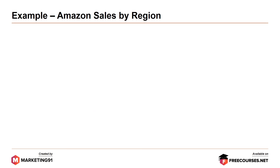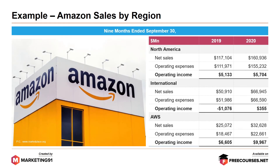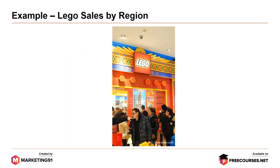Moving on to Amazon. Amazon's North America net sales witnessed a growth from $117 billion to $160 billion in 2020. Likewise, in the international market as well, net sales increased from $50.9 billion to $66.9 billion in 2020. As far as Amazon Web Services are concerned, net sales increased from $25.0 billion to $32.6 billion in 2020, thus witnessing a rise in every segment.